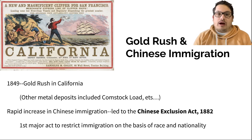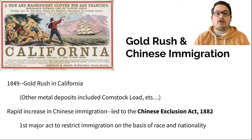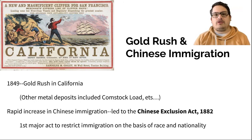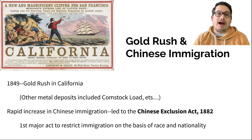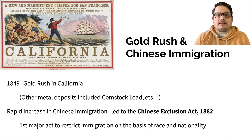People coming out who want to strike gold and make it rich. In 1849 you do have the gold rush in California, and there are also other deposits, but we typically focus on 1849. There is going to be a rapid influx of Chinese immigrants — California is pretty close to Asia, so that kind of makes sense.